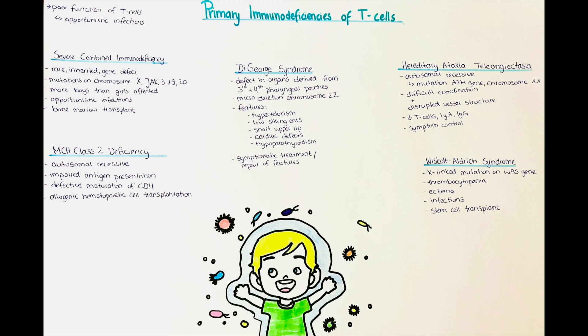The next primary immunodeficiency disorder is hereditary ataxia telangiectasia. It is inherited autosomal recessively and is due to mutations within the ATM gene located on chromosome 11. This ATM gene encodes a protein that helps control cell division and DNA repair. Cells in the cerebellum are especially affected by the lack of ATM protein, and since the cerebellum coordinates movement relative to position, these patients have difficulty coordinating their movements early in life.